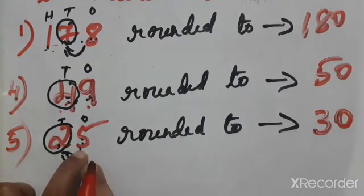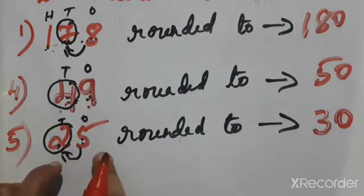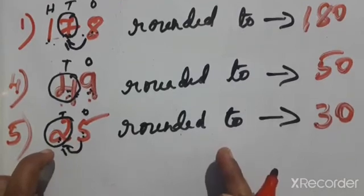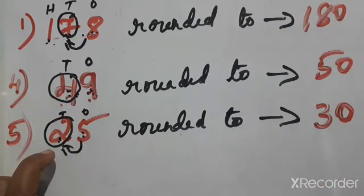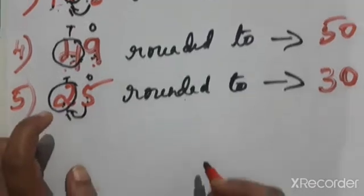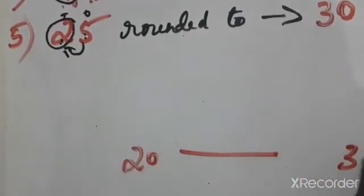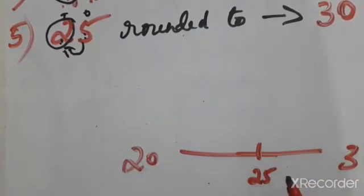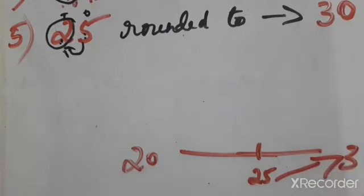Alternate method: numbers between 20 and 30. Twenty-five comes at the exact middle. Five or greater means it moves to the next number — 30. The difference is 10. Twenty-five is being rounded off. Since 25 is the exact middle number, five or greater moves to the next number. So 25 is nearer to 30 than 20. Therefore, 25 is rounded to 30.